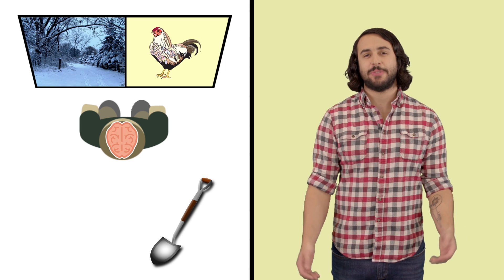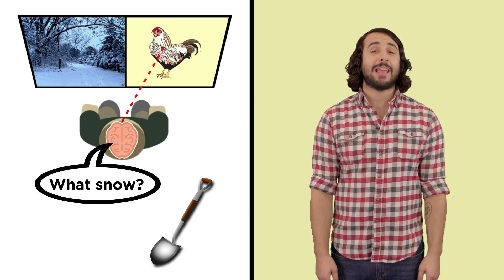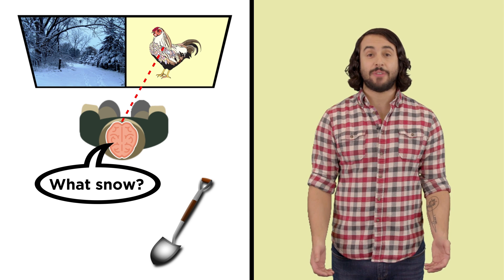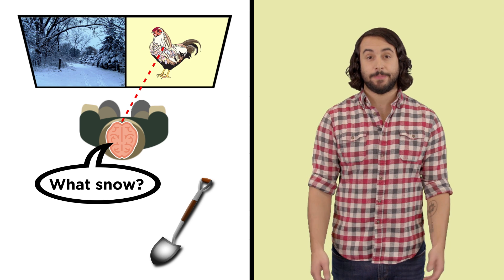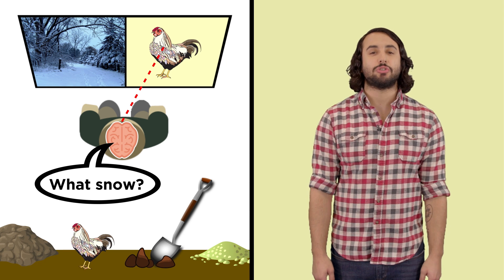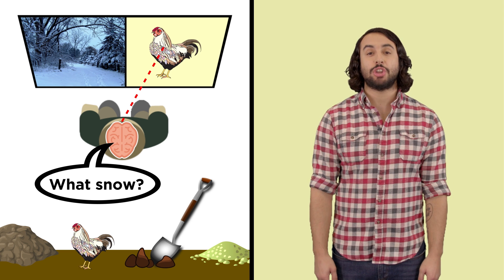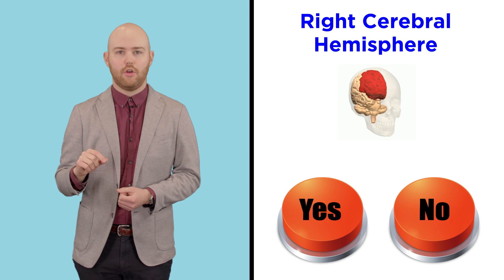So why did the left hemisphere give this answer? Not being able to see the snow scene, the left hemisphere doesn't know that the shovel was selected to shovel snow. Thus, this separate stream of consciousness invents a new reason involving the chicken scene that it can see.